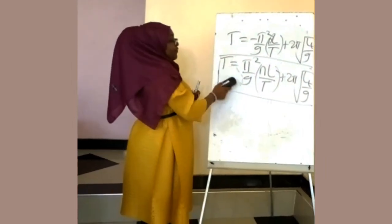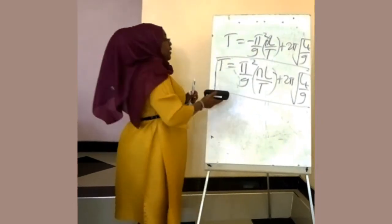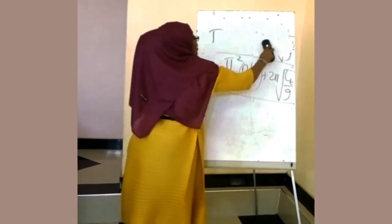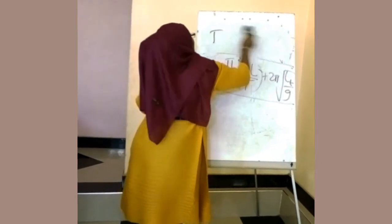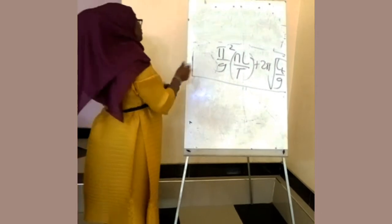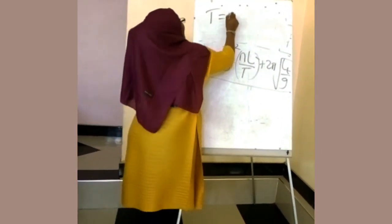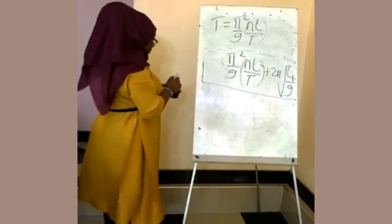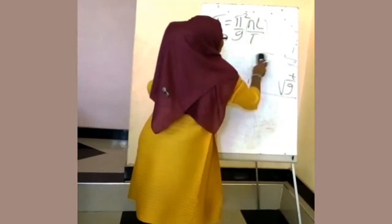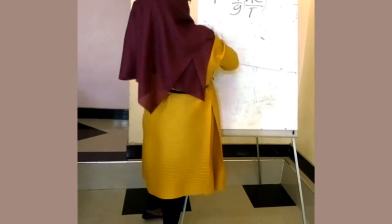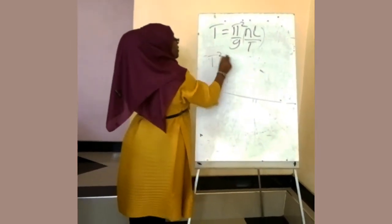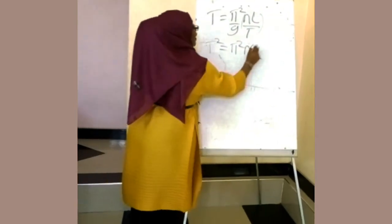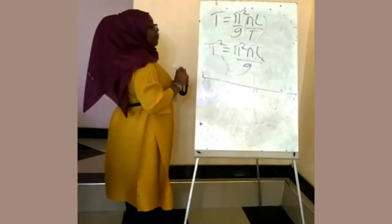So the effective periodic time for this is: considering the part of half angular velocity, T is equal to π² over G times L over T. Making T the subject and collecting like terms, T² is equal to π² × L × L over G.